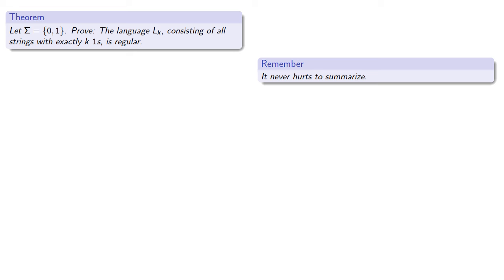And it never hurts to summarize. We proved that L0 is regular, and that if Lk is regular, then Lk plus 1 is also regular. Consequently, Lk is regular for k equals 0, 1, 2, 3, and so on, and in particular, L12 is regular.